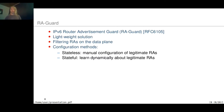The assumption for this approach is that every node in the network is connected through an administered layer 2 switch to the router. This approach proposes two configuration methods: the stateless configuration, in which an administrator manually configures the legitimate router advertisement entries, and the stateful mode, in which the system learns about these entries dynamically.